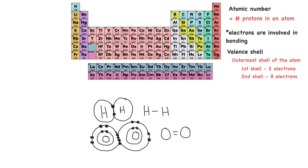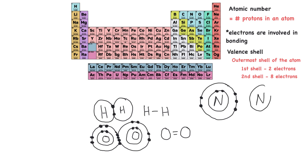Let's now take a look at nitrogen and how it engages in bonding. Nitrogen has the atomic number seven — that's the number of protons, which tells us the number of electrons. So nitrogen has seven electrons. We fill the innermost shell with two, and then we have five more in the valence shell. This valence shell can hold eight. So because nitrogen looks like this, when nitrogen comes into contact with another nitrogen, they're going to share three pairs of electrons.